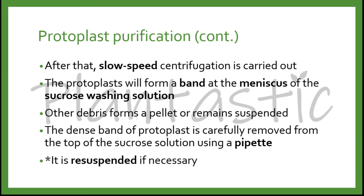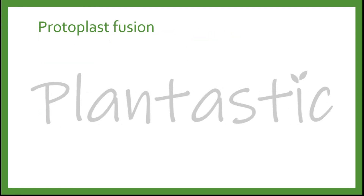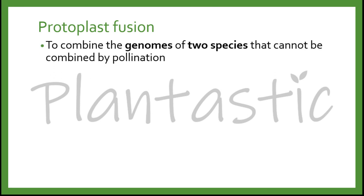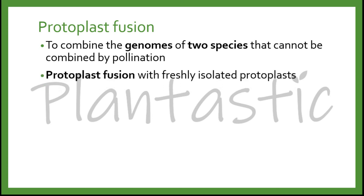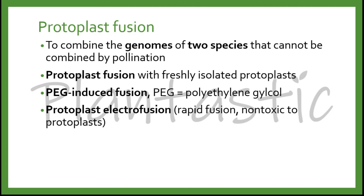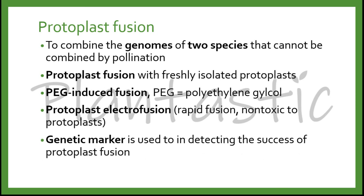The next step after protoplast purification is protoplast fusion, which is used to combine the genomes of two species that cannot be combined by pollination. Protoplast fusion is usually conducted with freshly isolated protoplasts. It can be PEG-induced fusion — where PEG is polyethylene glycol — or using electrofusion, which causes rapid fusion and is non-toxic to the protoplasts. Genetic markers may be used to detect the success of protoplast fusion.